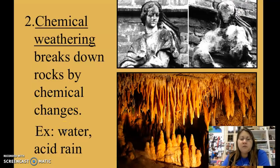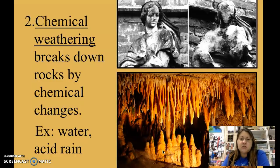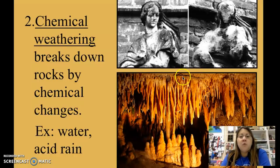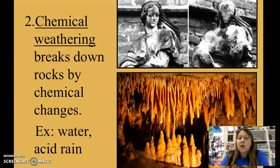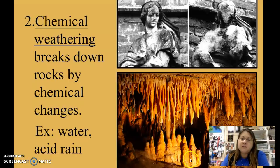Another example of chemical weathering is caves — stalactites and stalagmites, like those at Luray Caverns. These form from carbonic acid, created when carbon dioxide in the air mixes with water. The carbonic acid eats away at the limestone and forms a solution that drips and builds these cave features.